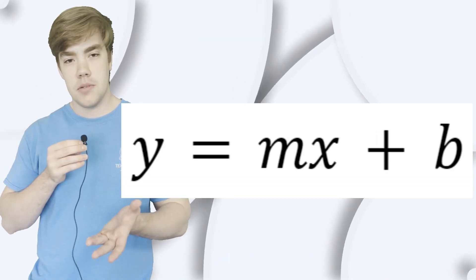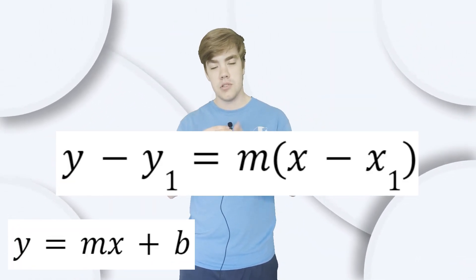You need to know y equals mx plus b. That's simply the formula for any linear function, and you need to know it in standard form. The standard form of a linear function is y minus y1 is equal to m times x minus x1. You probably learned these in middle and maybe early high school. But you do need to know them, so don't forget them.